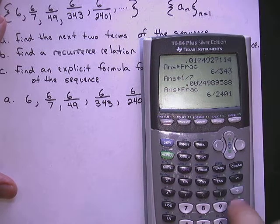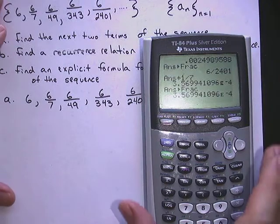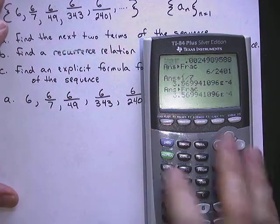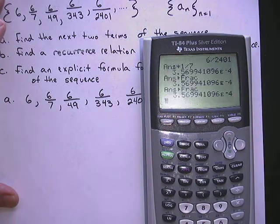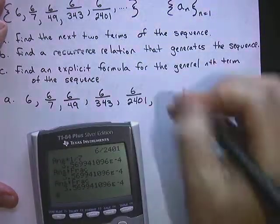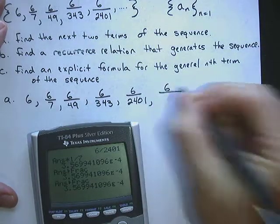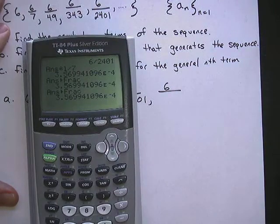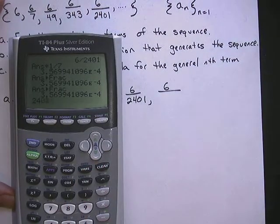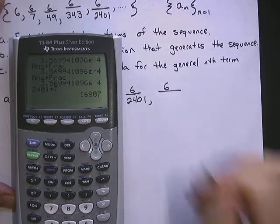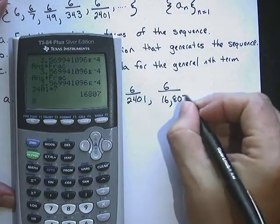However you want to look at that. So times 1 divided by 7, math, enter, enter, gives us not that. Let's do it a different way. Let's just say 6 over, and then we'll multiply 2401 times 7. That would be 16,807.